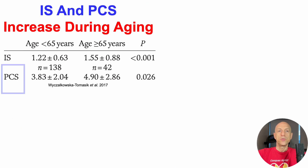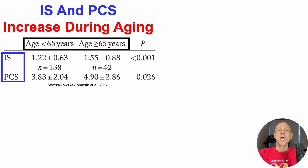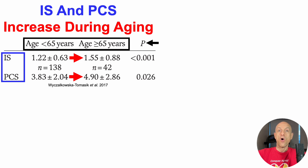Levels of indoxyl sulfate and p-cresyl sulfate are shown on the left, with data for people younger than 65 years and older than 65 years shown on the left and right respectively. For both metabolites, we can see that indoxyl sulfate increases from 1.22 to 1.55 micromolar, and p-cresyl sulfate increases from 3.83 to 4.9 micromolar in people younger versus older than 65.